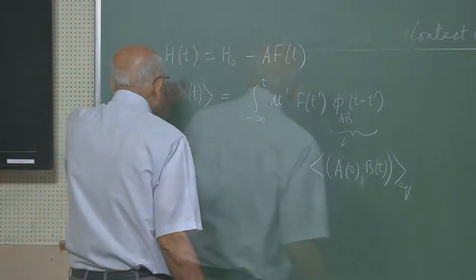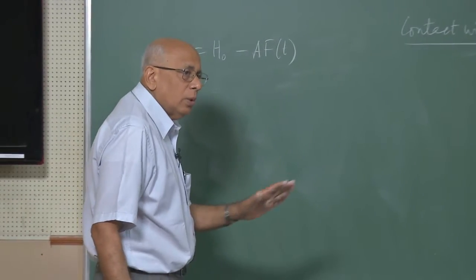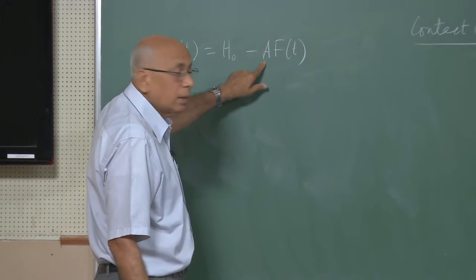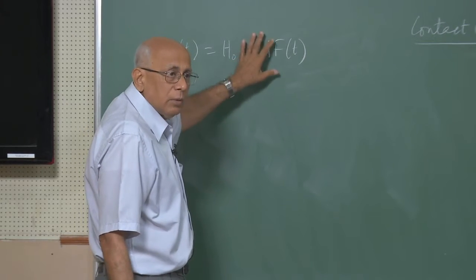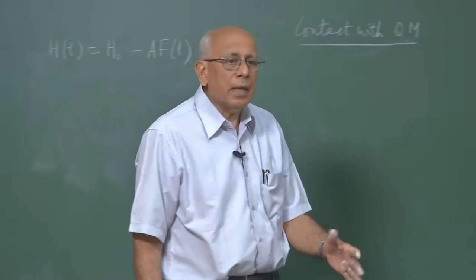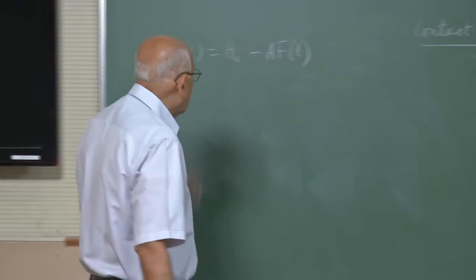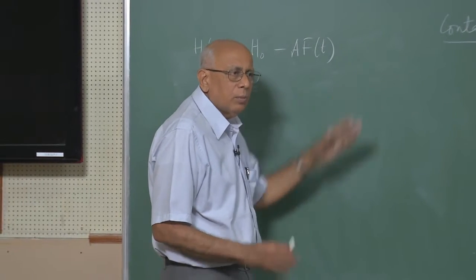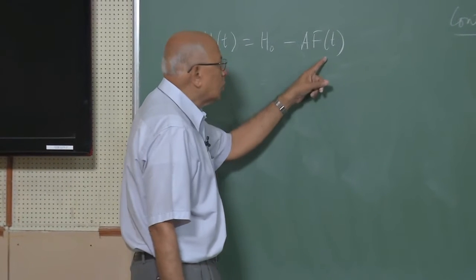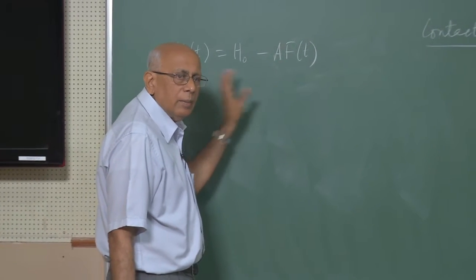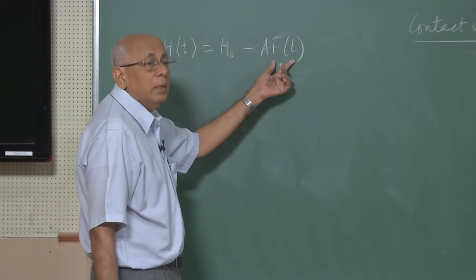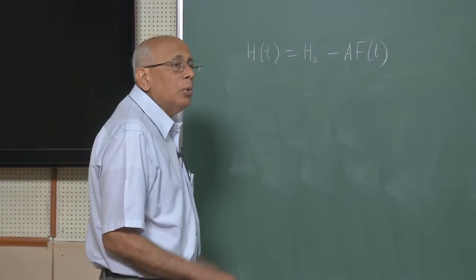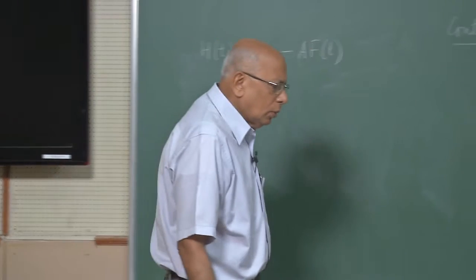So again I start with this. When we do not put any subscript on any Hamiltonian, it is supposed to be in the Schrödinger picture — time independent, no explicit time dependence. It is a physical observable; we will take A to be a Hermitian operator. Similarly, the Hamiltonian is Hermitian. We will also take F(T) to be real so that the Hermiticity of the Hamiltonian is ensured.